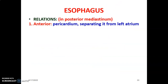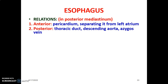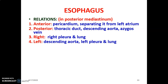Within the posterior mediastinum, the pericardium and its contents are anterior to the esophagus, so the pericardium separates the esophagus from the left atrium of the heart. Posterior to the esophagus in the posterior mediastinum are the thoracic duct, descending aorta, and azygos vein. To the right is the right pleura and lung, and to the left is the left pleura and lung as well as the descending aorta.